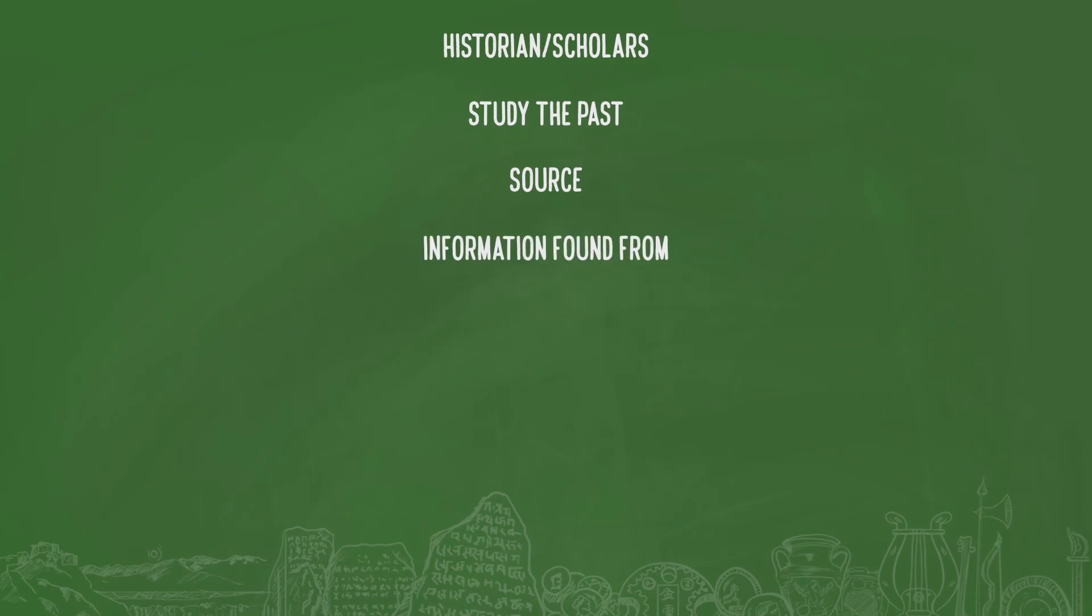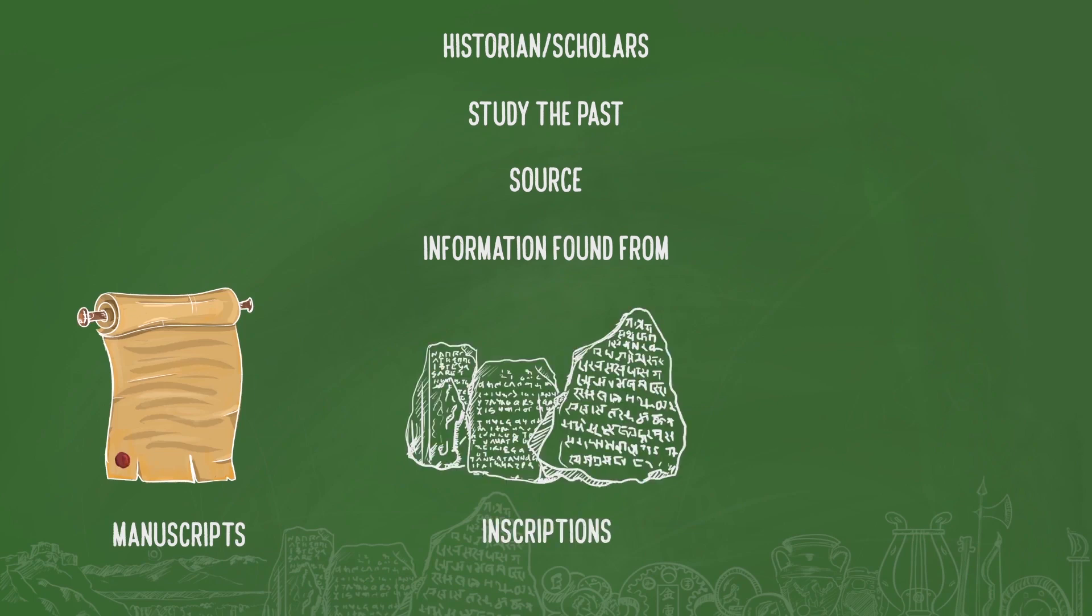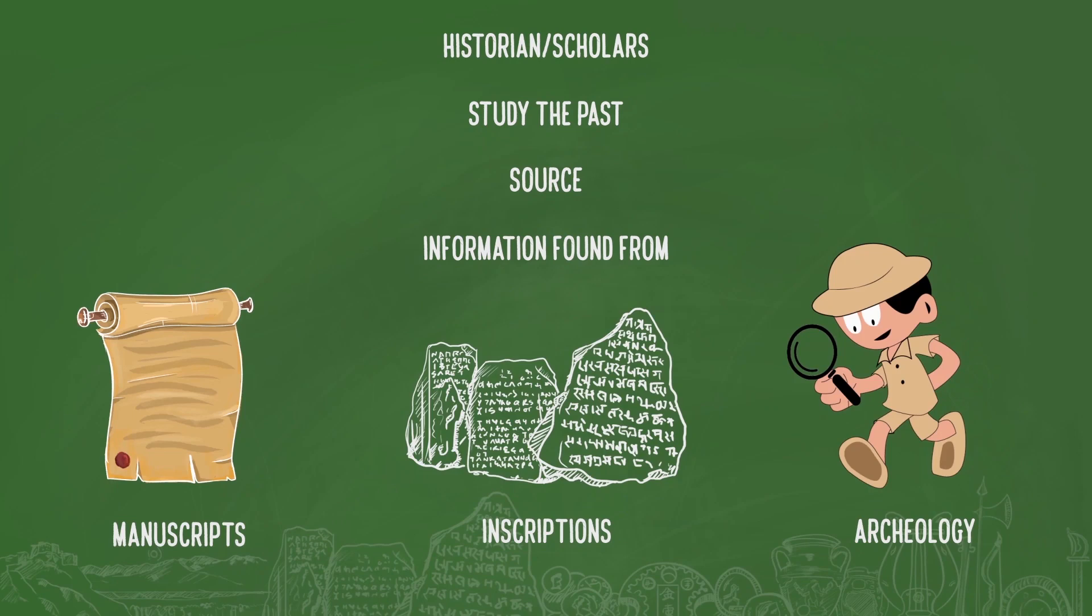Historians, that is scholars who study the past, often use the word source to refer to the information found from manuscripts, inscriptions and archaeology. Once sources are found, learning about the past is like an adventure. Historians and archaeologists, like detectives, use these sources to learn about our past.